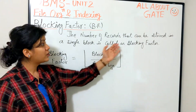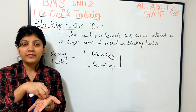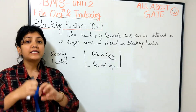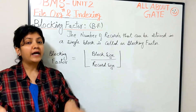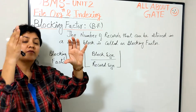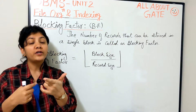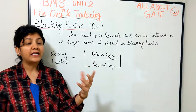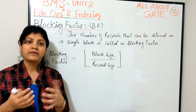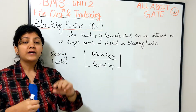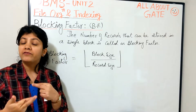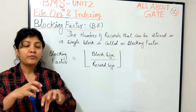The number of records that can be stored in a single block is called the blocking factor. Each block size is the same on a disk, so there is a uniform size for every block and the entire disk is divided into equal-size blocks. The number of records stored in one block equals the number in another block, but it depends on the record size. For a single file, all records can have the same size to keep things simple.